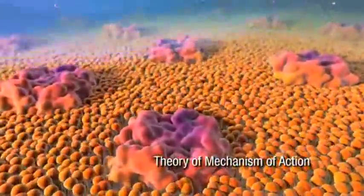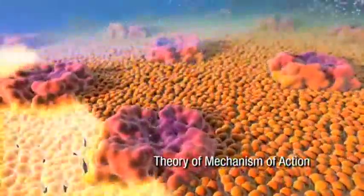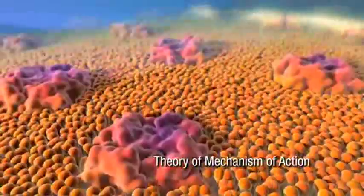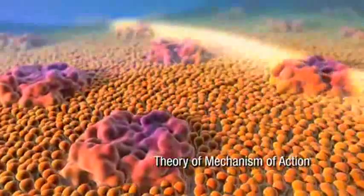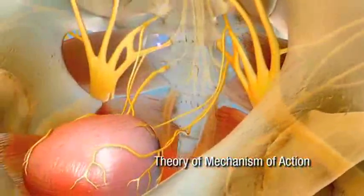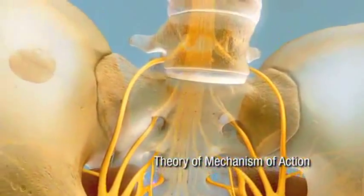This stimulation likely depolarizes the nerve, causing an action potential that propagates impulses along the axon as if the neuron naturally fired an action potential. As a result, it is thought that abnormal sensory input from the bladder is modulated.